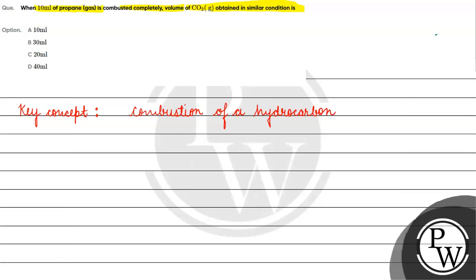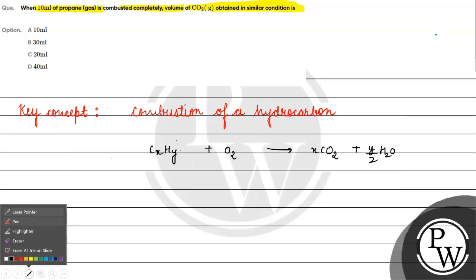If we talk about combustion of hydrocarbon, what do we call hydrocarbon? We will call it CxHy. Combustion of hydrocarbon, what will become? X moles of carbon dioxide will become and Y by 2 moles of water.